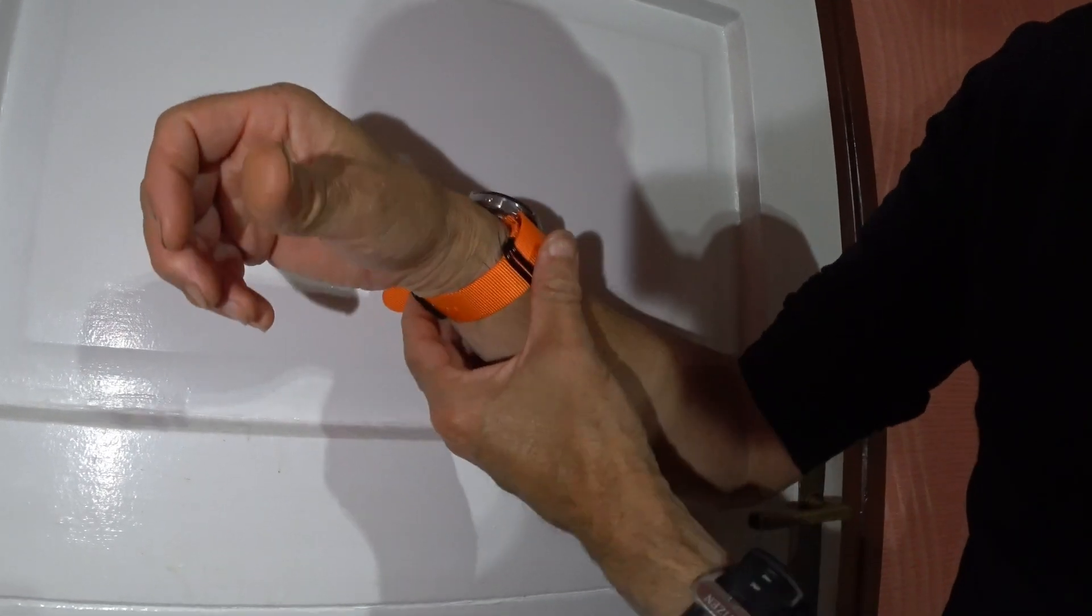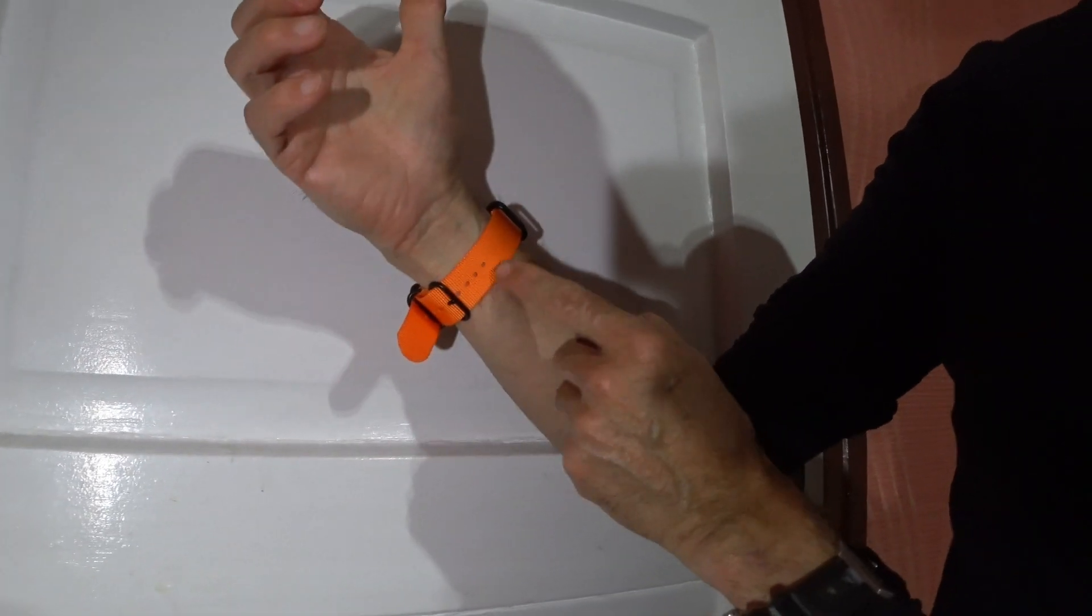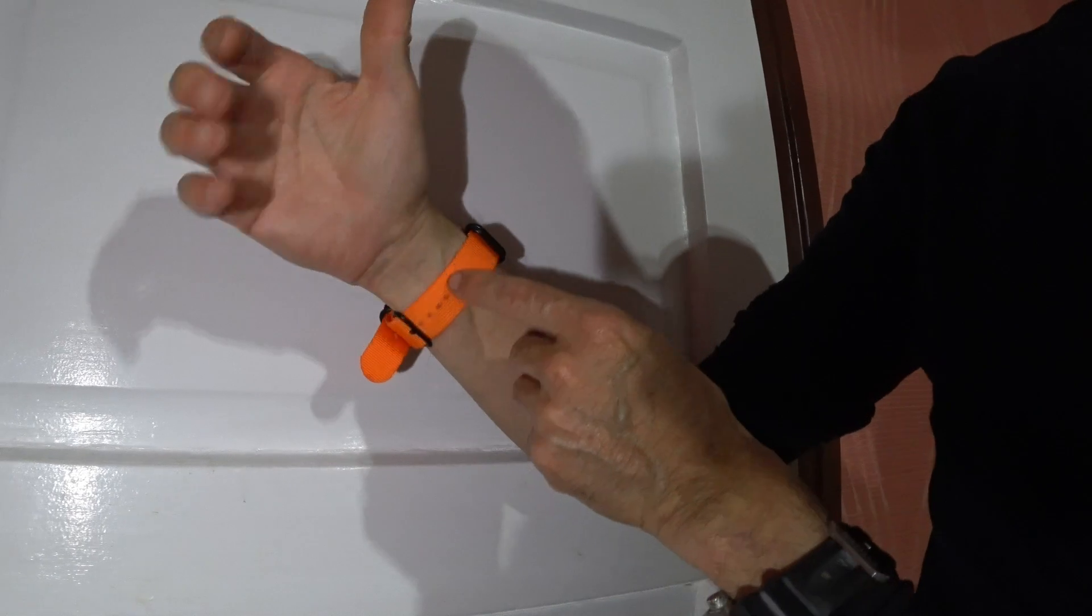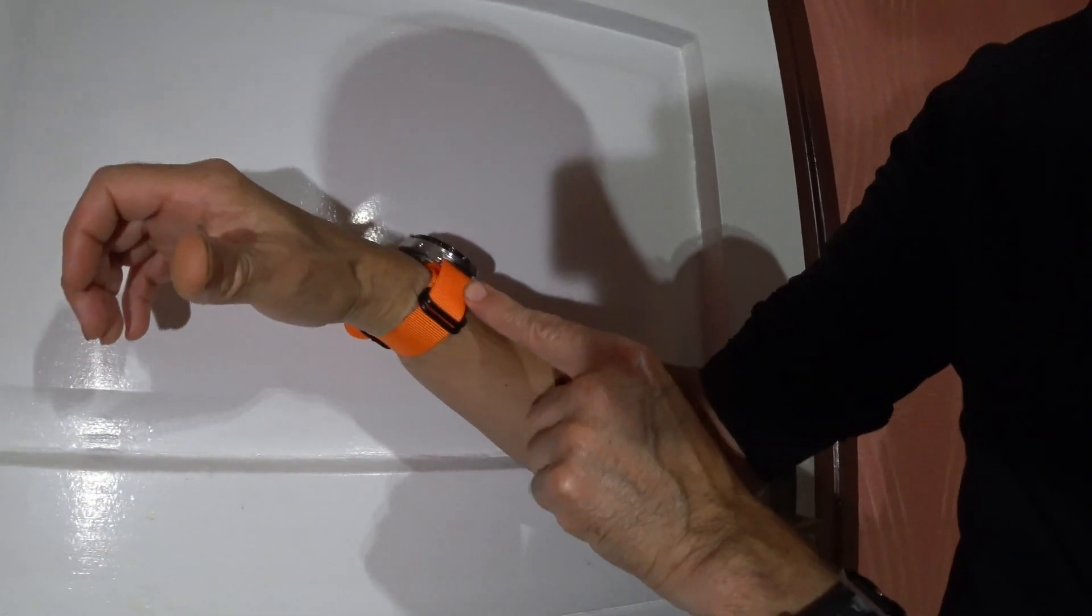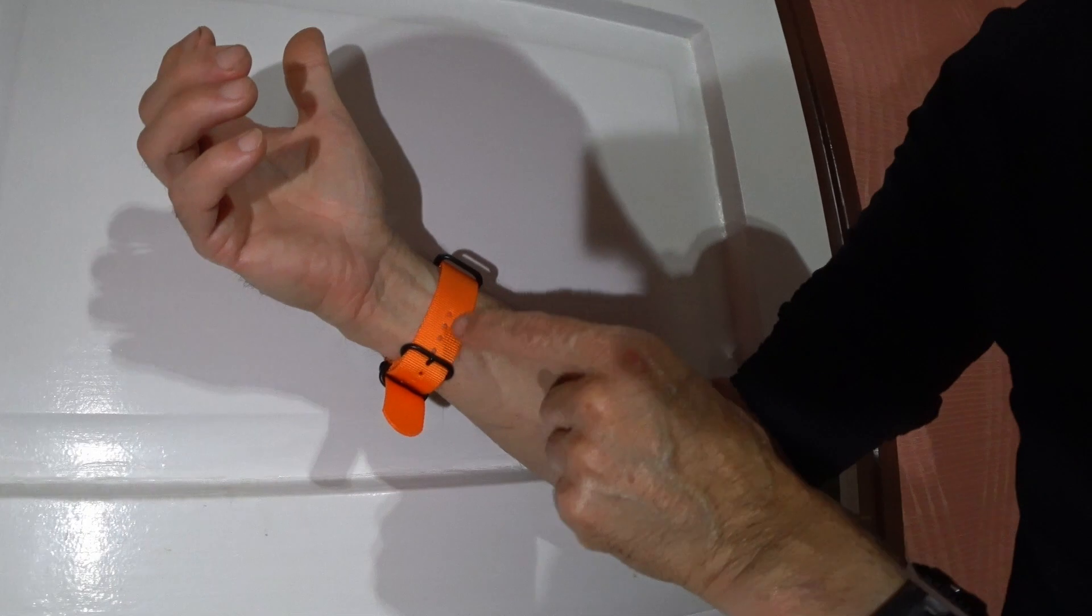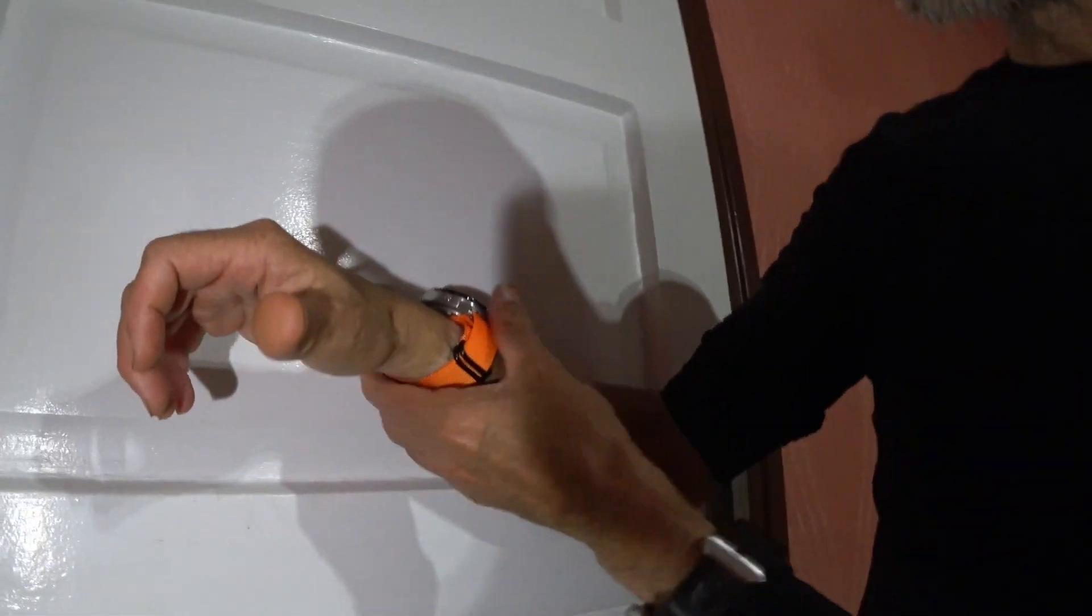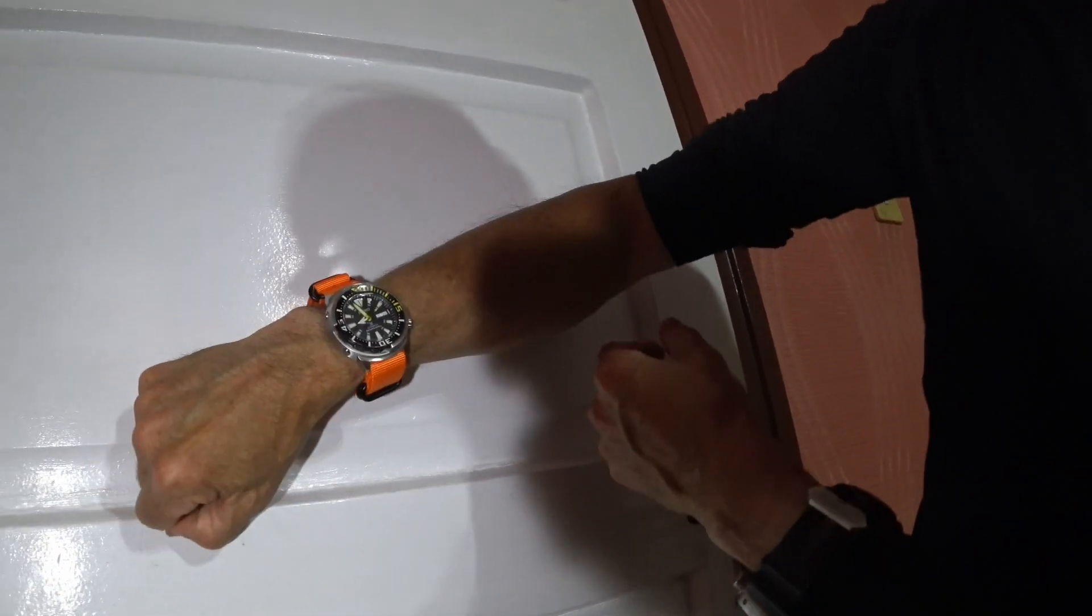But if you had a smaller wrist, so these things will fit a kid. You know, if you've got a kid can wear these NATO watch bands as well, not just an adult. I've still got one, two, three, four, you could go up smaller on a really small wrist and that's the beauty of them.